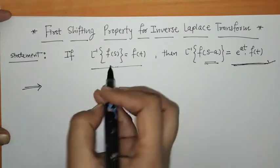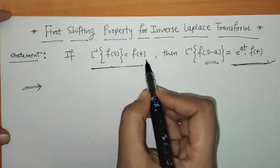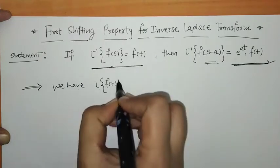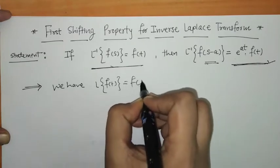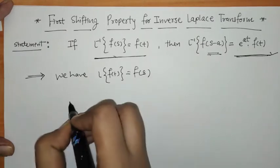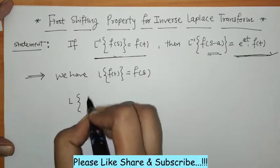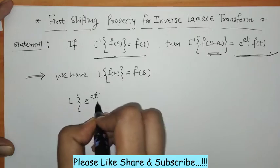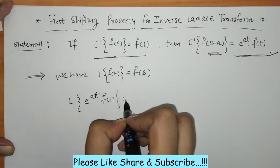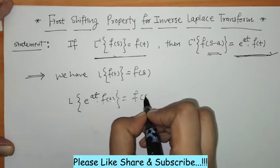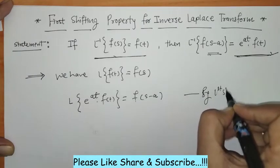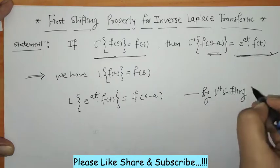We are given that L⁻¹{F(s)} = f(t), which means L{f(t)} = F(s). Now we know the first shifting property: L{e^(at) · f(t)} = F(s-a). This is by the first shifting property of Laplace transform.